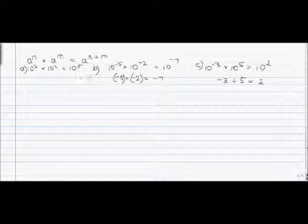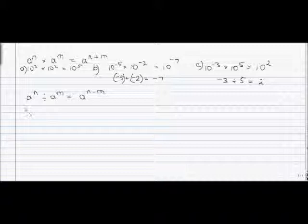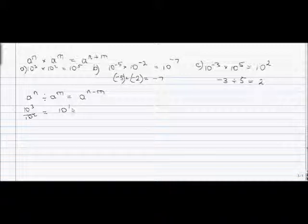Now let's do problems with division. For a to the n over a to the m, same as multiplication we keep the same base, but the exponents are subtracted. For example, 10 to the third over 10 to the second: same base 10, and 3 minus 2 gives 1, so we get 10 to the first — you can just write 10, since the first power doesn't change anything.